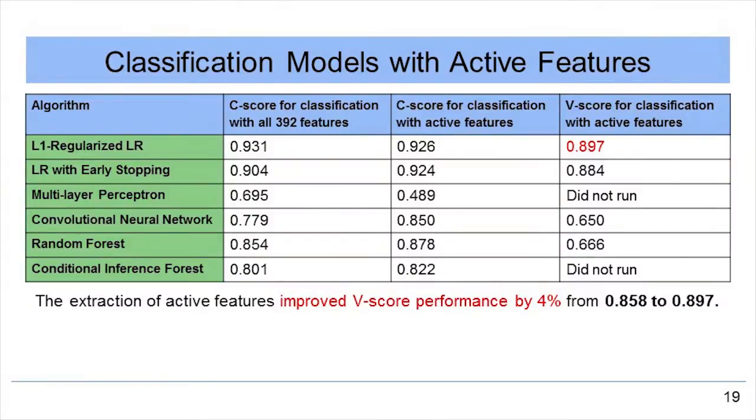Our second innovative optimization technique was to use extracted active features — features with non-zero weights that are important for diagnosis. We extracted about 30 active features from 392 features, eliminating the redundant features and reducing the noise. For example, minor axis and roundness were selected as important features, while area and perimeter were not. We found that almost all algorithms improved in performance, with the L1 regularized logistic regression model improving its V-score by 4%, from 0.858 to 0.897.